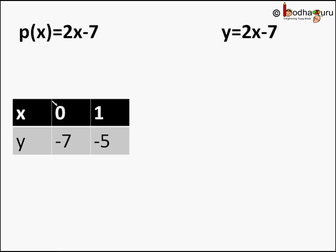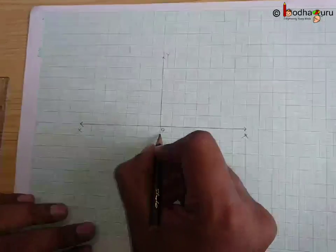So when x equals 0, we get 2 multiplied by 0 minus 7, which equals -7, so y equals -7. And when x equals 1, we get 2 multiplied by 1 minus 7, which equals 2 minus 7, which is -5, so y equals -5. So we have two points now.